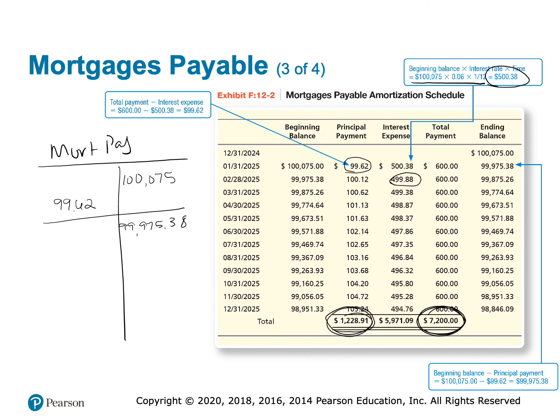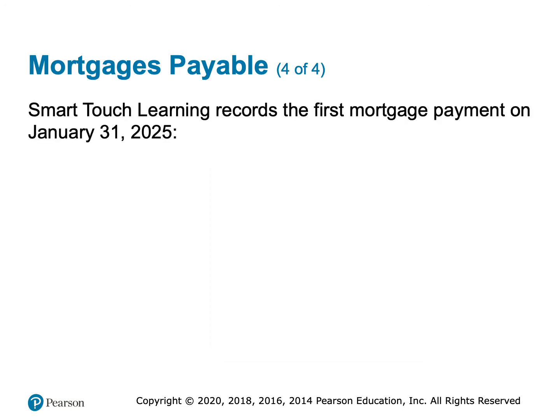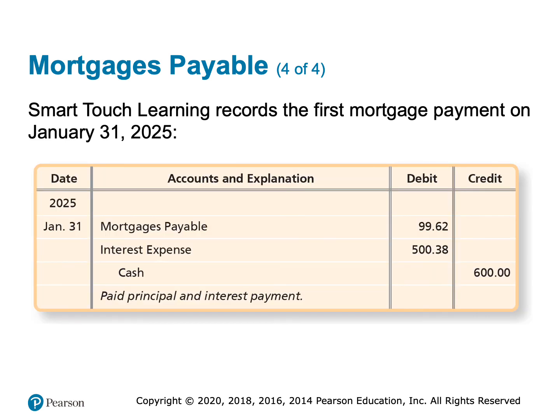When we make the first monthly mortgage payment on January 31st, we credit cash $600, debit mortgage payable $99.62, and debit interest expense $500.38. We refer back to the amortization table each month and adjust these amounts as necessary.